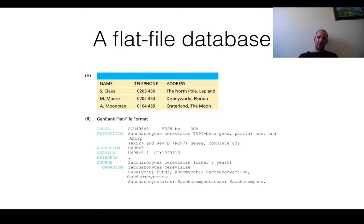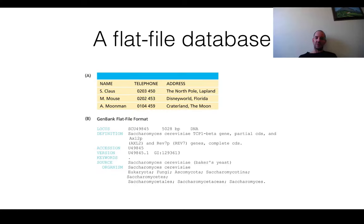A classic traditional example of a database could be a telephone book. So you have S. Klaus with a phone number and an address, and M. Mouse with a phone number and an address. If you search for a name, you search for Klaus and find his phone number. Or you search for all names with an M in them, and you find M. Mouse and A. Moman, and their phone numbers and addresses. Or you search for a phone number and find a name.